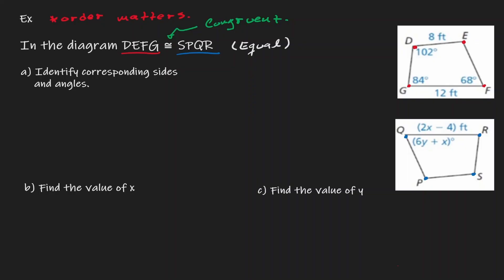And that's where we want to take a look at example A. In example A, we want to identify corresponding sides and corresponding angles. The word corresponding sides and corresponding angles implies equal parts and equal angles — or congruent sides and congruent angles.